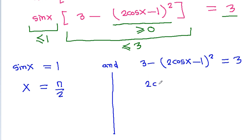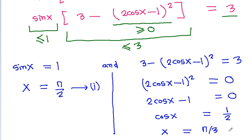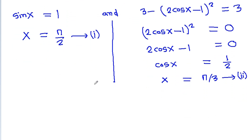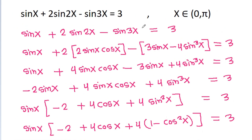Here we get (2 cos x minus 1) whole square is equal to 3 minus 3, which is 0. So 2 cos x minus 1 equals 0, and cos x equals 1 by 2, giving x equals pi by 3. Calling these equation 1 and equation 2, x cannot equal pi by 2 and pi by 3 at the same time, so the given equation has no solution.